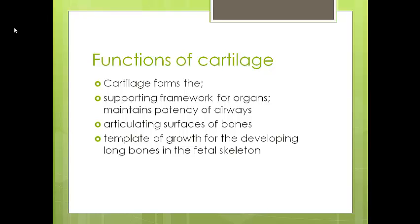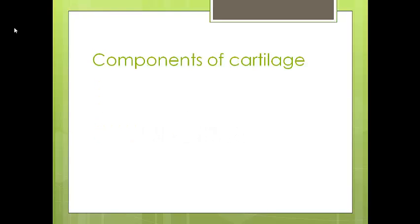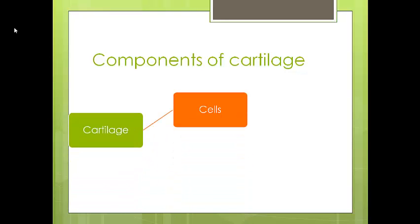Cartilage also forms a template for growth of the developing long bones in the fetal skeleton. Think of it like a tray made of cartilage that takes the shape of the bone, acting as a template so that bone components can be deposited on that cartilage and then take the shape of the bone they will eventually become. So cartilage has two major components: the cells and the extracellular matrix. The cells are not packed tightly together; there are spaces between them filled with the extracellular matrix.